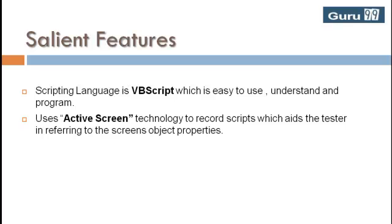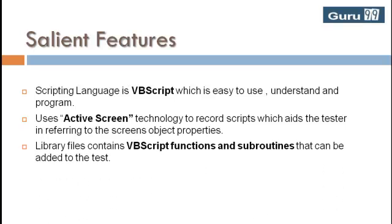QTP uses active screen technology to record scripts, which aids the tester in referring to the screen's object properties. Library files contain VBScript functions and subroutines that can be added to the test.